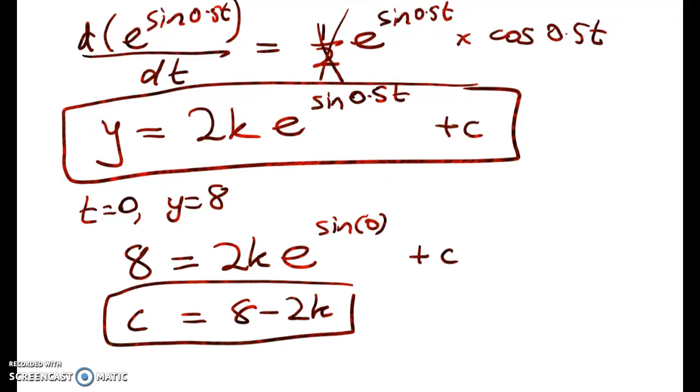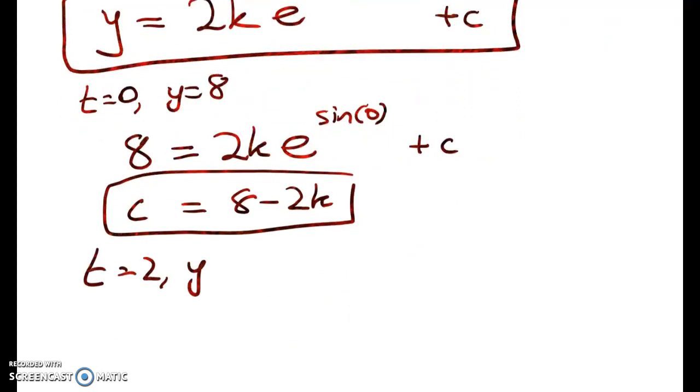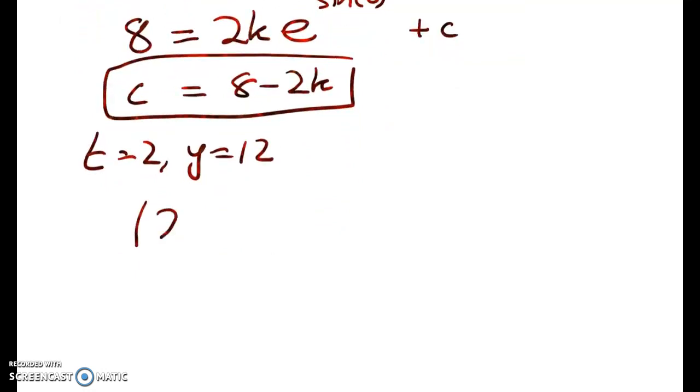All right, so nothing completely sorted out yet. We're going to need to now use the next point, which is that when t is 2, y is 12. So this one will get a little bit messier. We get 12 is equal to 2k times e to the sine of 0.5t times 2, which is sine 1, plus c.